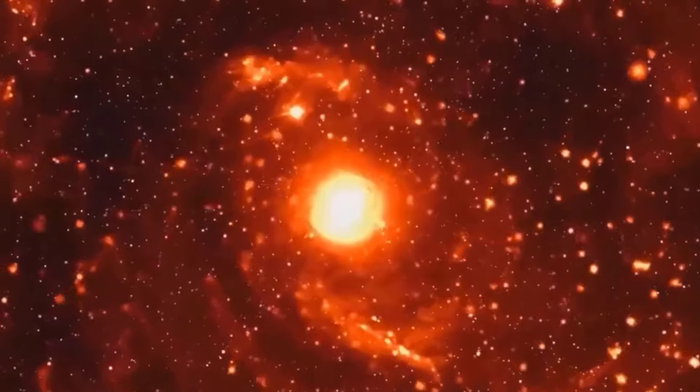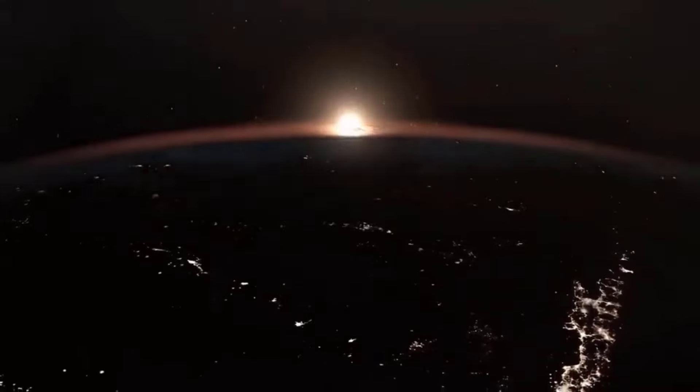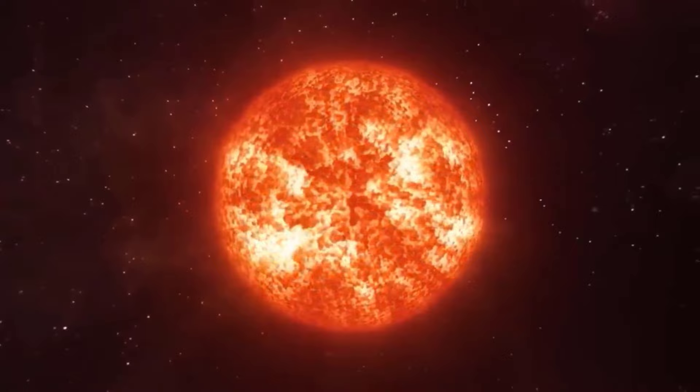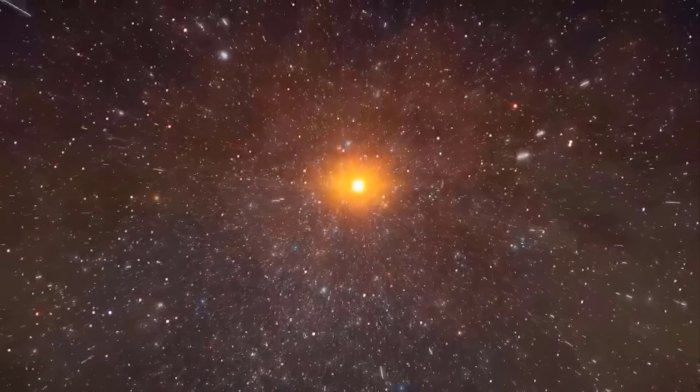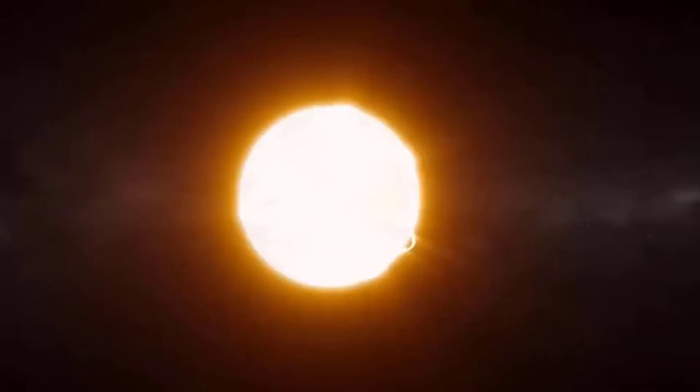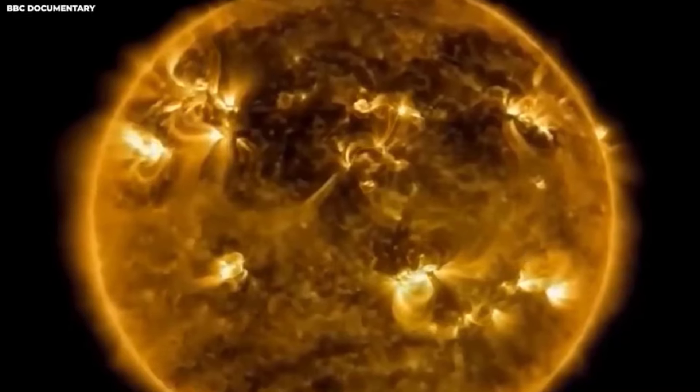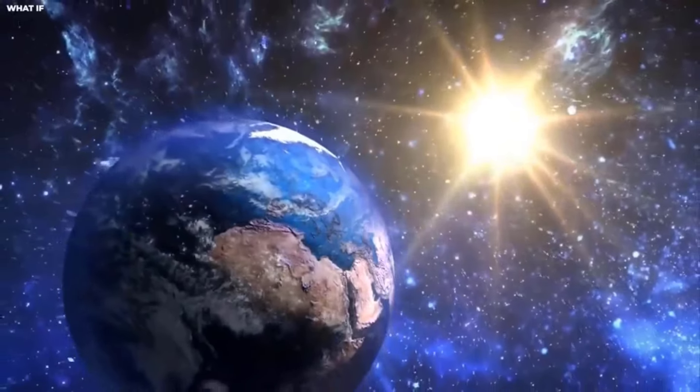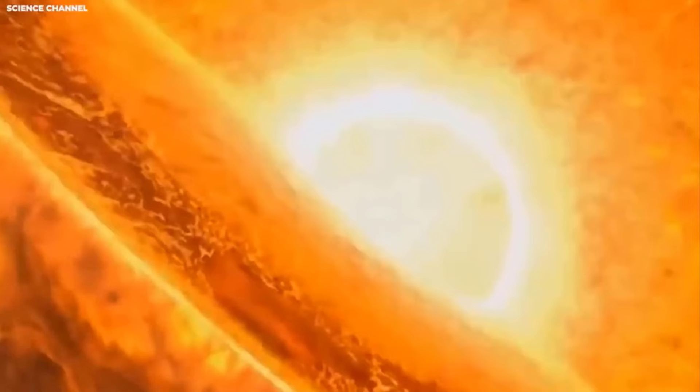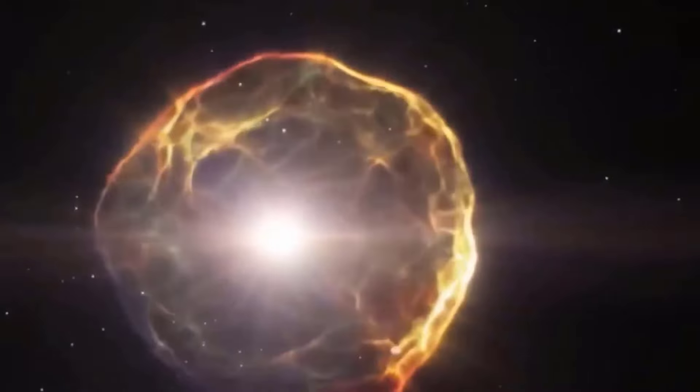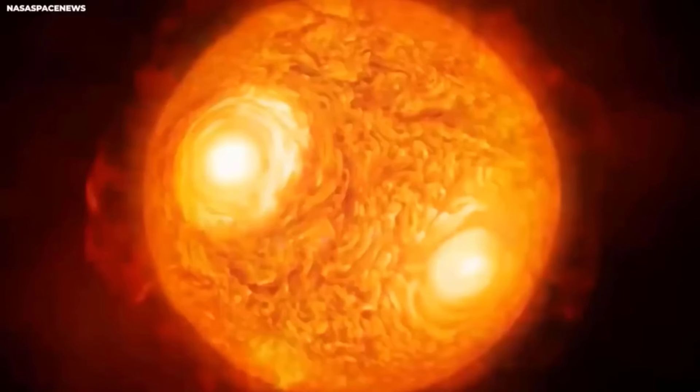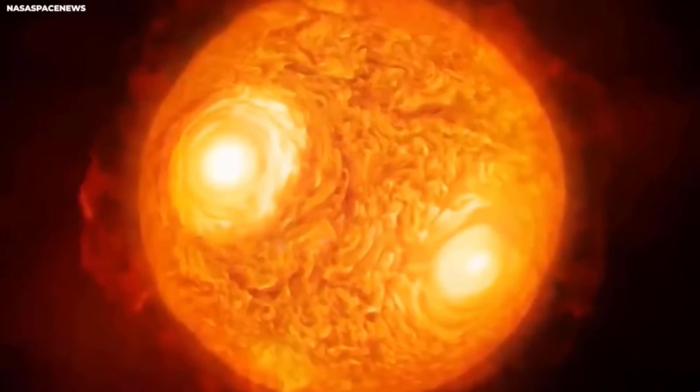The first recorded supernova in history, SN 185, was a remarkable celestial event witnessed by Chinese astronomers in 185 AD. Chinese astronomers made a historic observation when they noticed an incredibly bright and unfamiliar light in the night sky. They called it a guest star due to its sudden and brilliant appearance. The origin of this intense brightness was traced back to a star situated approximately 8,000 light years away from Earth. The guest star created by this supernova explosion remained brilliantly visible for eight months before gradually fading from the naked eye's view.